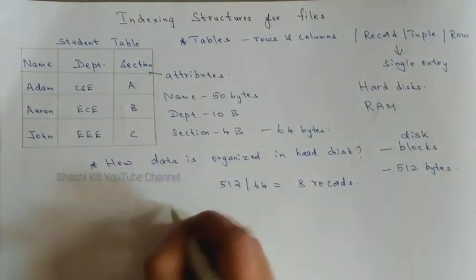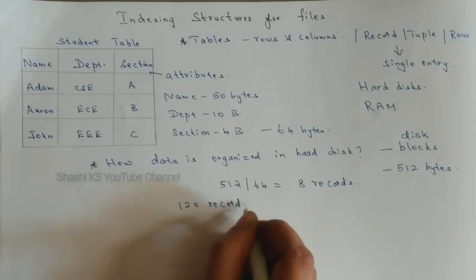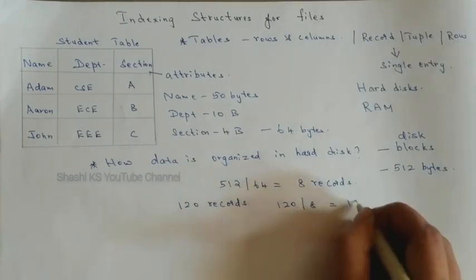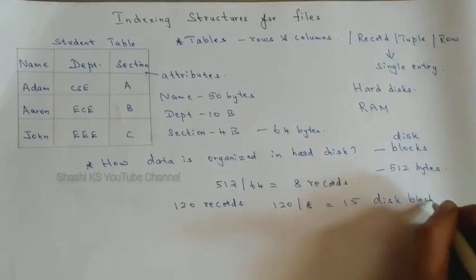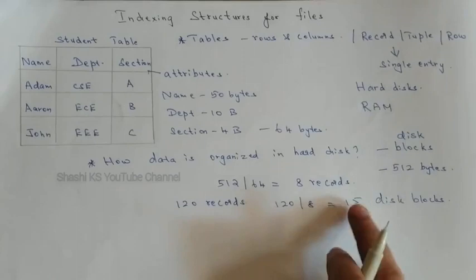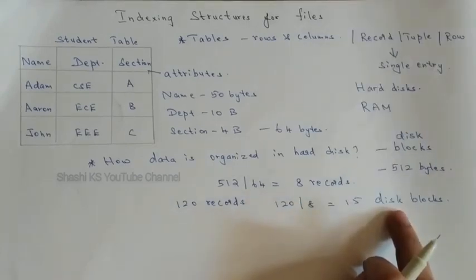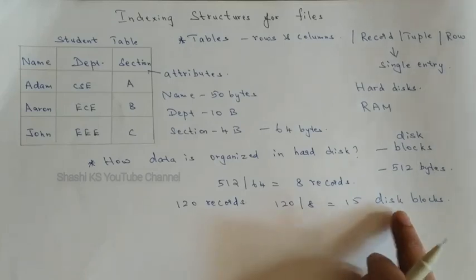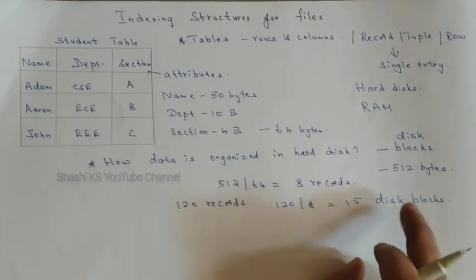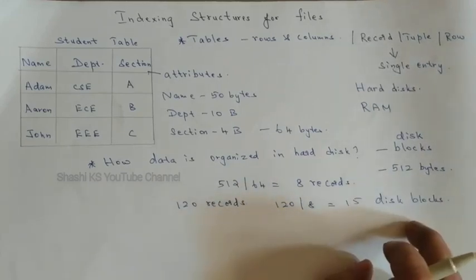If my database has 120 records, I will need 120 divided by 8, which is 15 disk blocks, to store all the data. To access any record in the table, I have to scan through all 15 disk blocks to find the required record. If the DBMS follows this linear search procedure, the access time is going to be very slow. So we are trying to make this search faster by creating an index for the table, which resides on the disk.